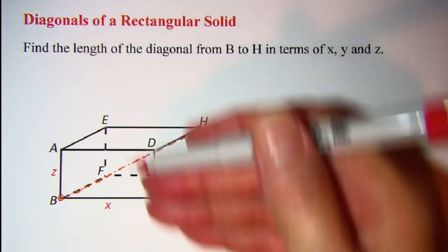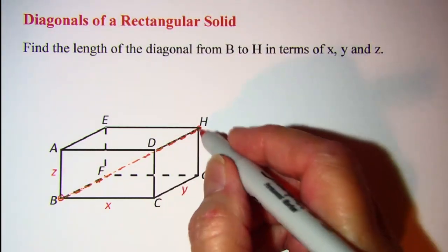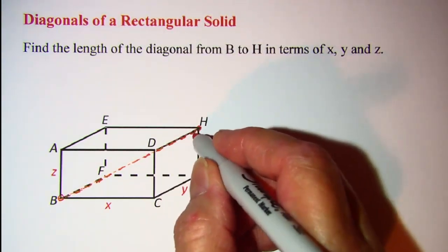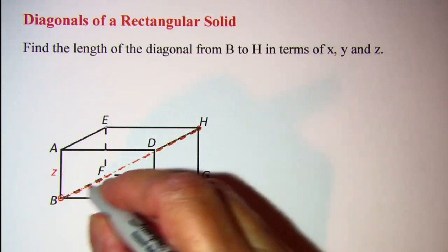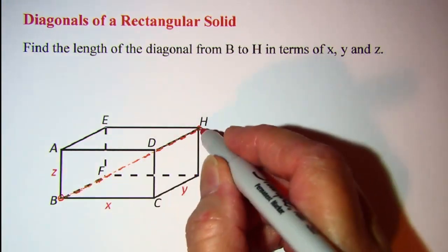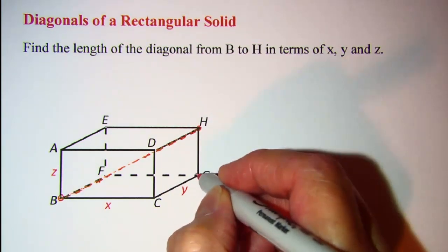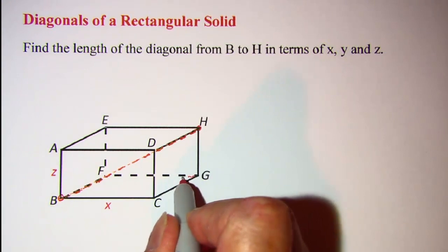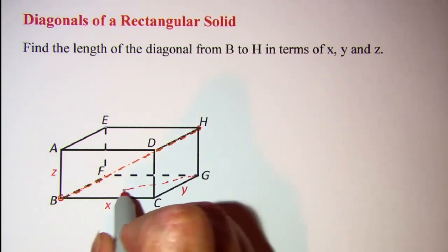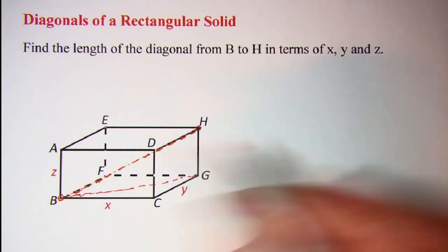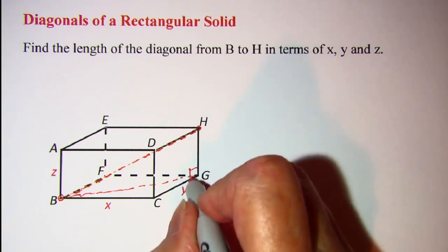the slice going down and use the right triangle that has BH as the hypotenuse, HG as one of the legs, and then BG as the other leg, and that is the right triangle.